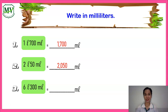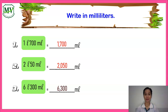Number three: six liters and three hundred milliliters. The correct answer for number three is six thousand three hundred milliliters.